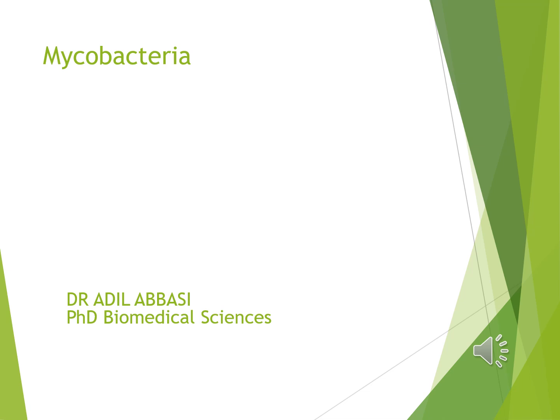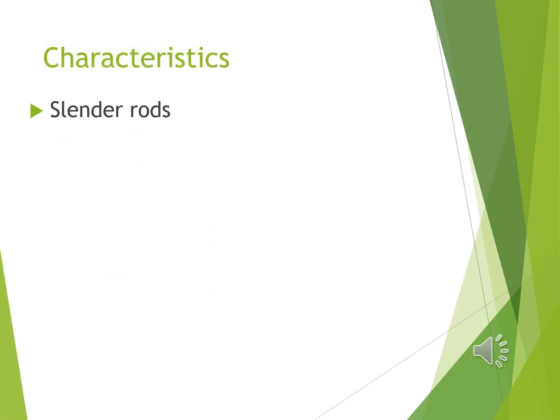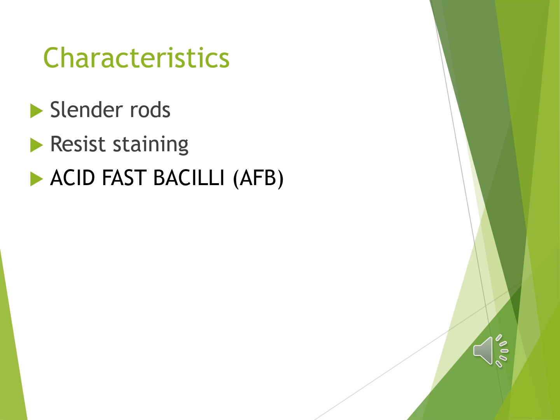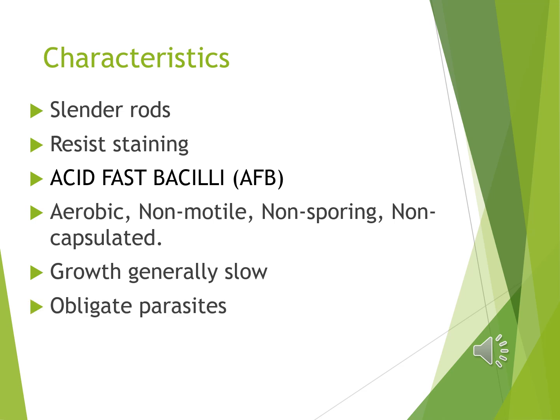Now we are looking at mycobacteria, specifically Mycobacterium tuberculosis. It's a major human-to-human disease which affects healthy people and also people who have issues with AIDS or chronic disease undergoing prolonged treatment. The characteristics are that they are slender rods, they resist staining unless using acid fast bacilli staining. They are aerobic but non-motile, non-sporing, non-capsulated. Growth is generally slow and they are obligate parasites.